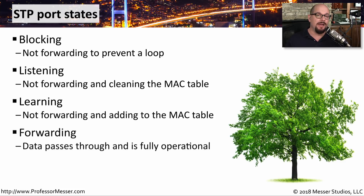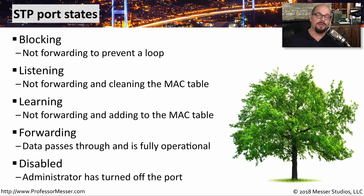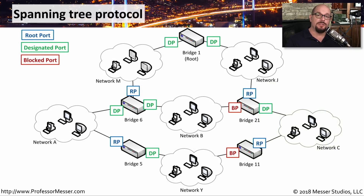Once traffic is allowed through that port, it goes into a forwarding mode, which is a fully operational mode to allow traffic to communicate using Spanning Tree Protocol. And you, as the administrator, could decide to completely disallow any traffic from ever going across that interface by administratively disabling the port. Here's an example network using Spanning Tree Protocol. If Spanning Tree was not enabled on this network, you would have a loop as traffic was able to move between any of these networks at any time.